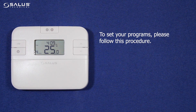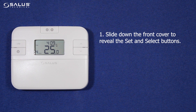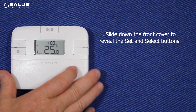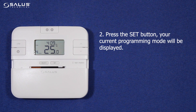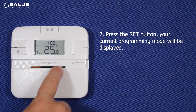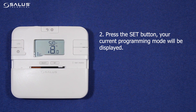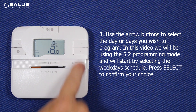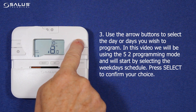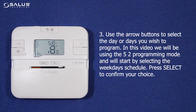To set your programs, please follow this procedure. Step 1: Slide down the front cover to reveal the set and select buttons. Step 2: Press the set button. Your current programming mode will be displayed. Step 3: Use the arrow buttons to select the day or days you wish to program. In this video we will be using the 5-2 programming mode, and will start by selecting the weekdays schedule. Press select to confirm your choice.